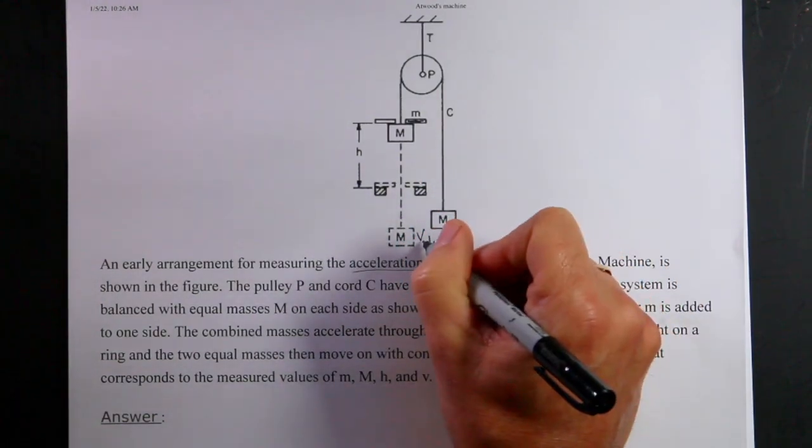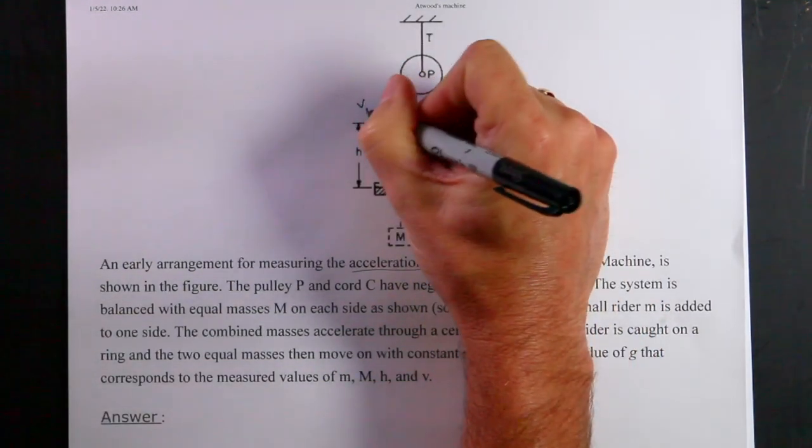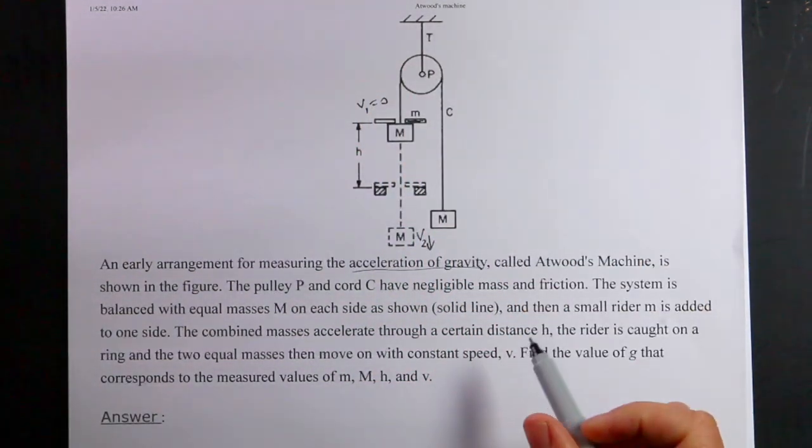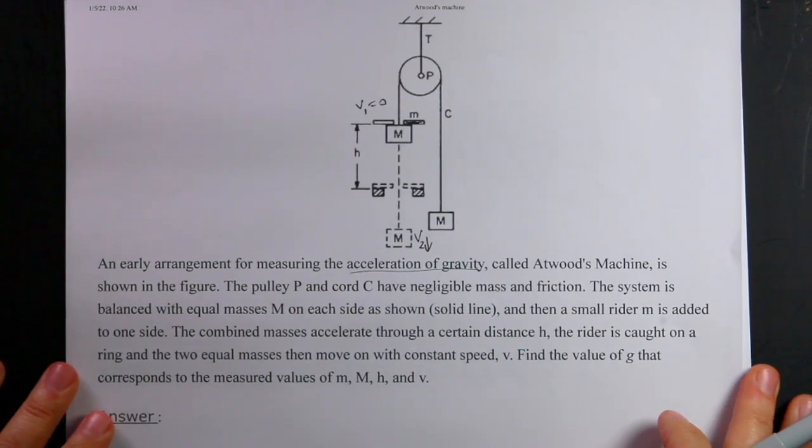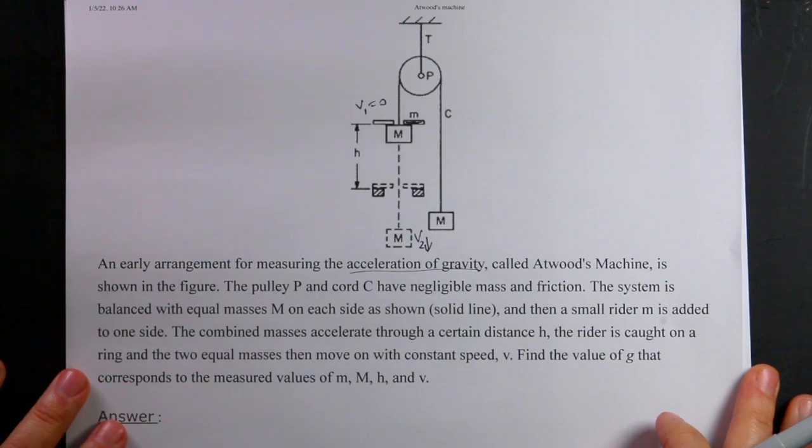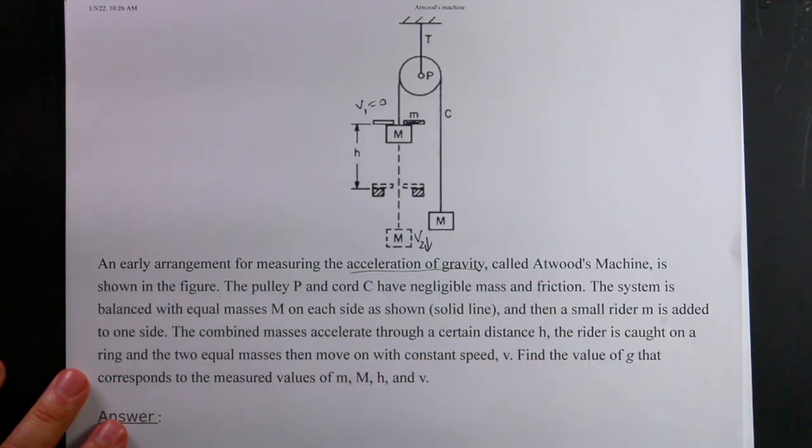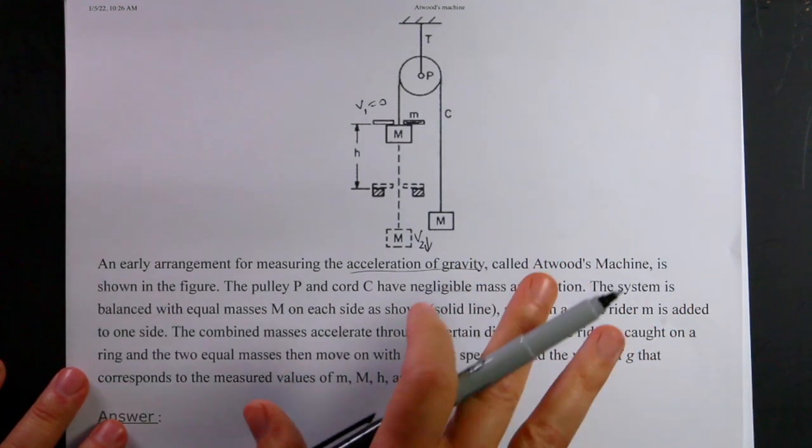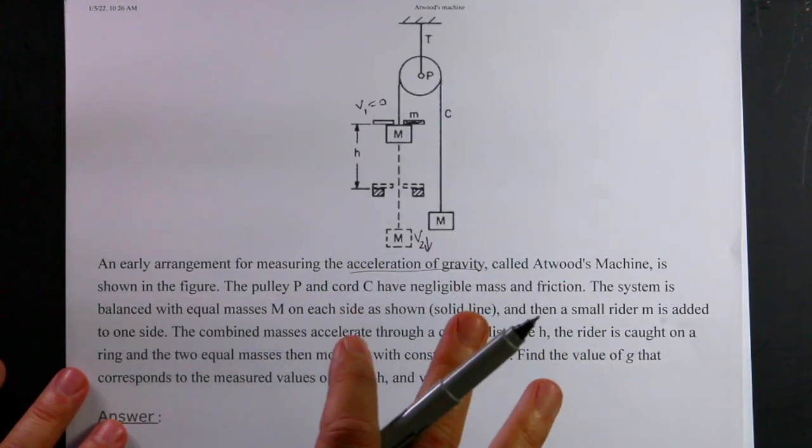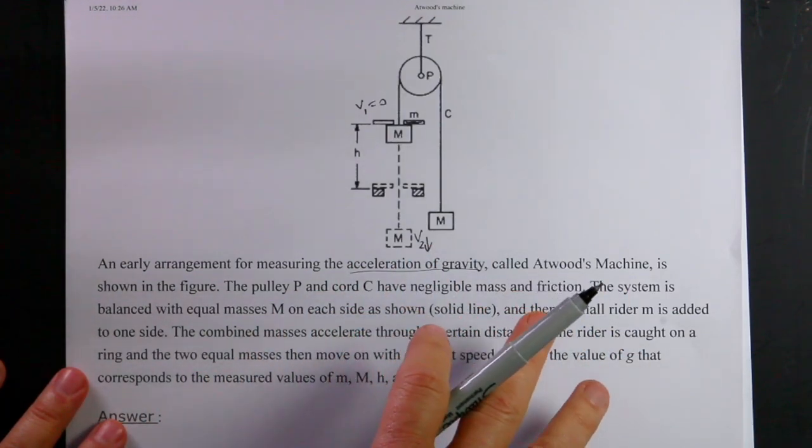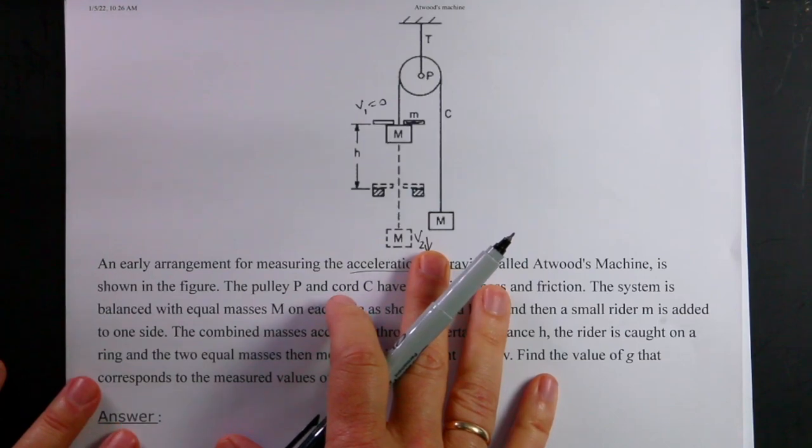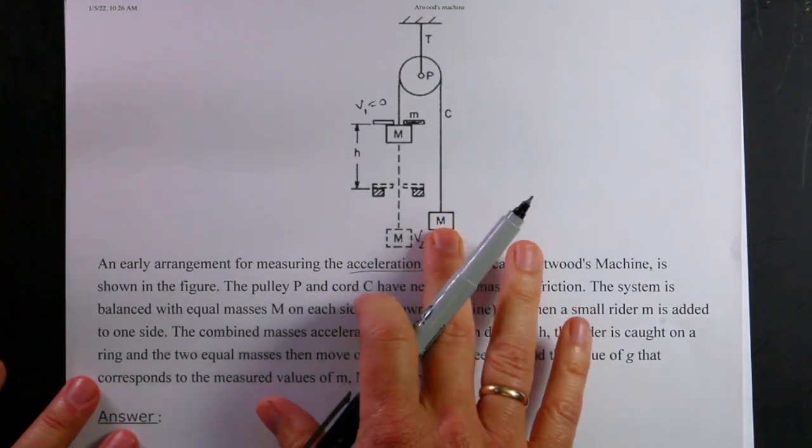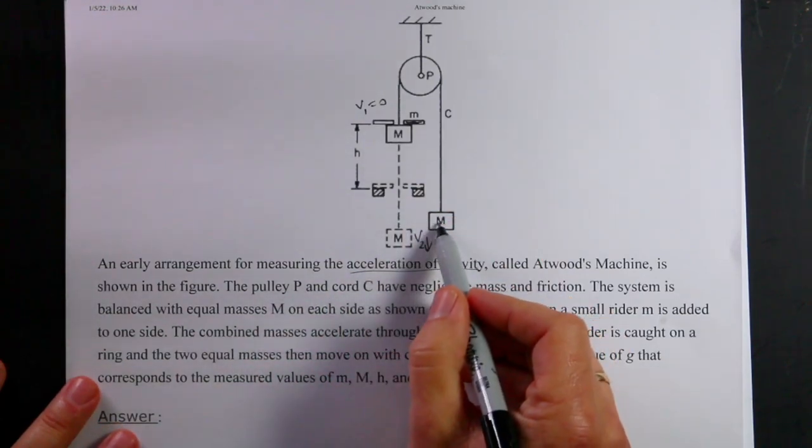Let's call that actually V2, and then V1 is zero. Okay, so we want to find G in terms of this. I kind of like this problem because there's no numbers. I'm a fan of that. Now, the one I looked at used work energy, which you definitely could use work energy on here, but I want to do this in a better way.